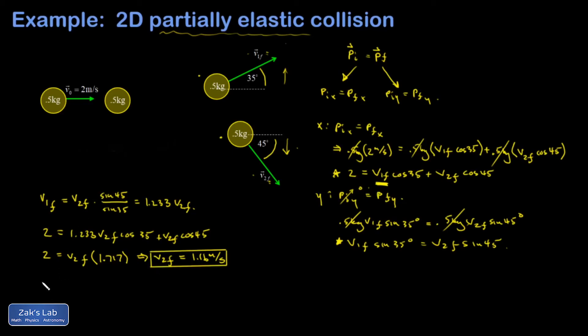Now I can go back to where I substituted for V1 final. V1 final is 1.233 V2 final and I find that V1 final is equal to 1.44 meters per second.